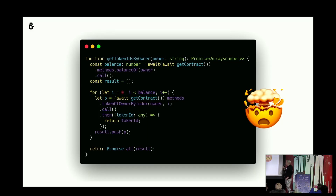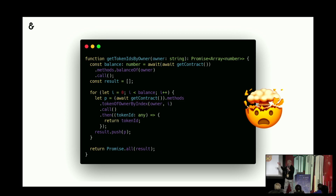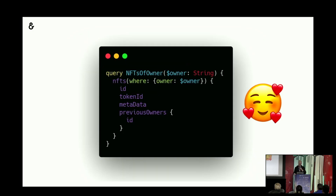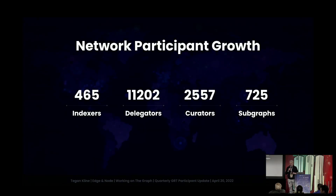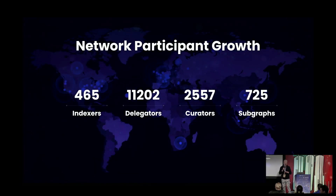If you just use an RPC and want to display all tokens a wallet holds, you end up with code that can take up to 10 seconds to resolve. With The Graph, you can have a beautiful GraphQL query that in one request gives you all tokens for a user, and you can also influence how the query looks. That's great — but The Graph is not only the technology, it's also a decentralized network.